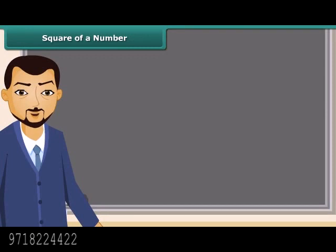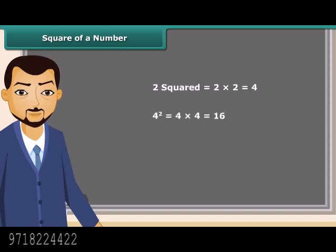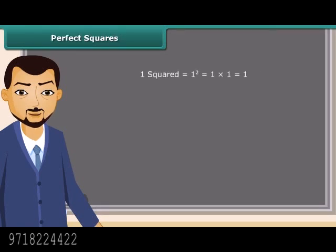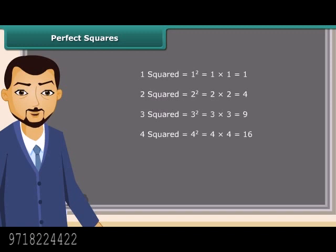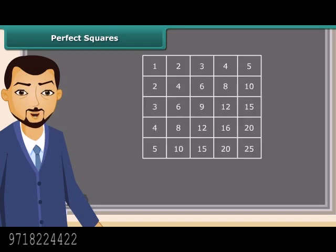Let us first learn about squares. How can we square a number? It is easy — just multiply the number with itself. You can also write square in the superscript. This tells 4 is multiplied twice, which is equal to 16. 1 square is 1, 2 square is 4, 3 square is 9, 4 square is 16, 5 square is 25, and so on. We can also find squares on the multiplication table.